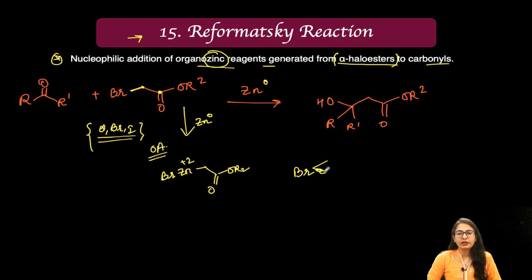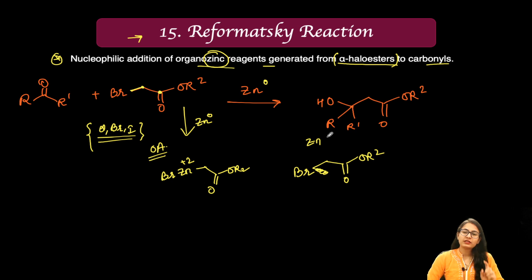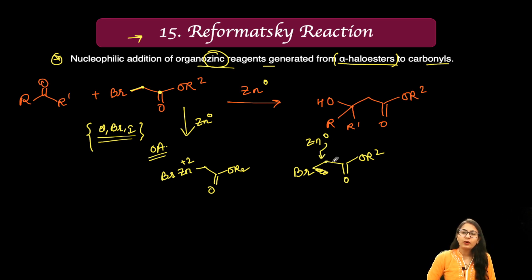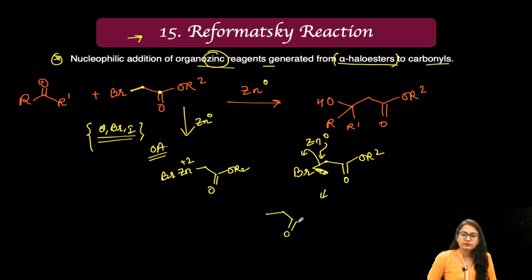Alternatively, some books describe this as zinc — in the zero oxidation state — transferring two electrons to the alpha carbon, causing the carbon-bromine bond to break, giving a carbanion with a negative charge and zinc(II) bromide.